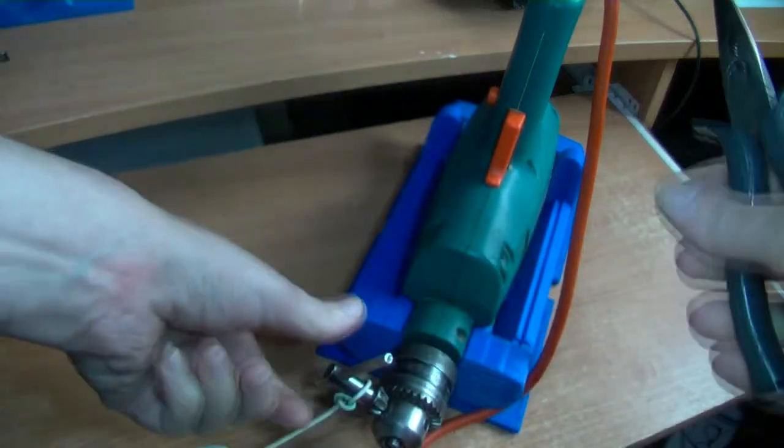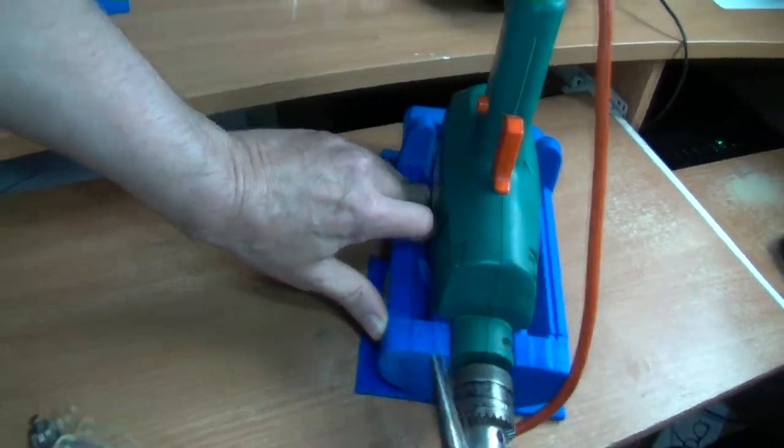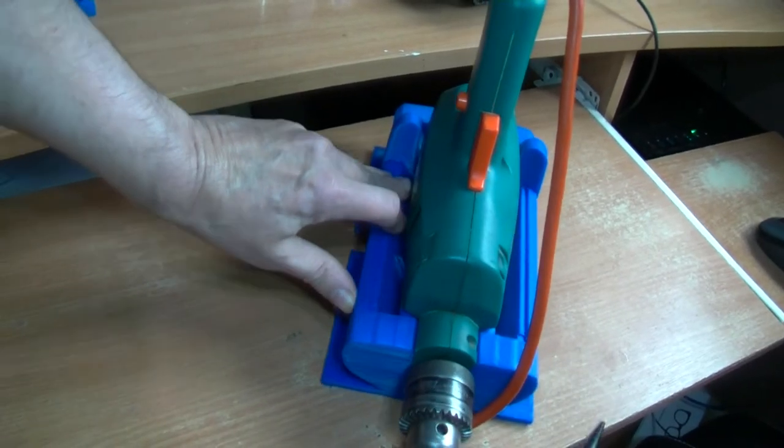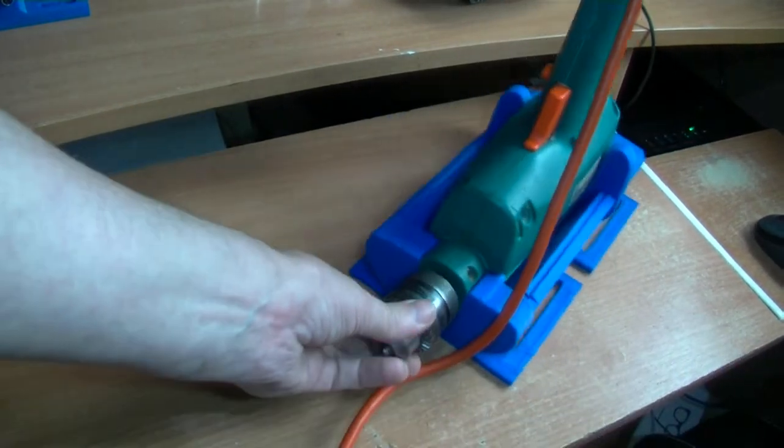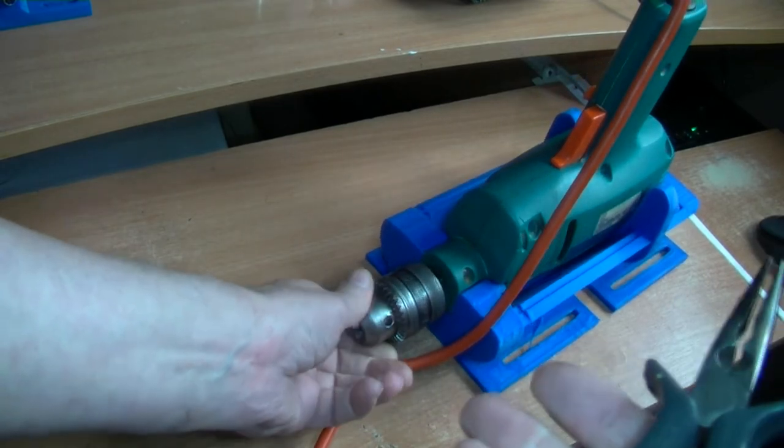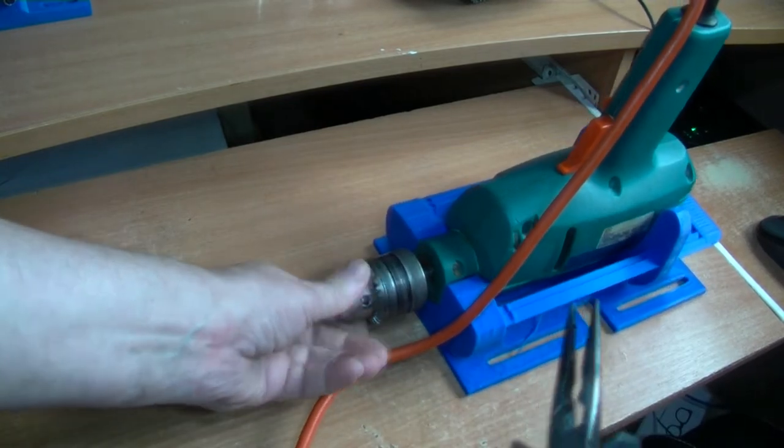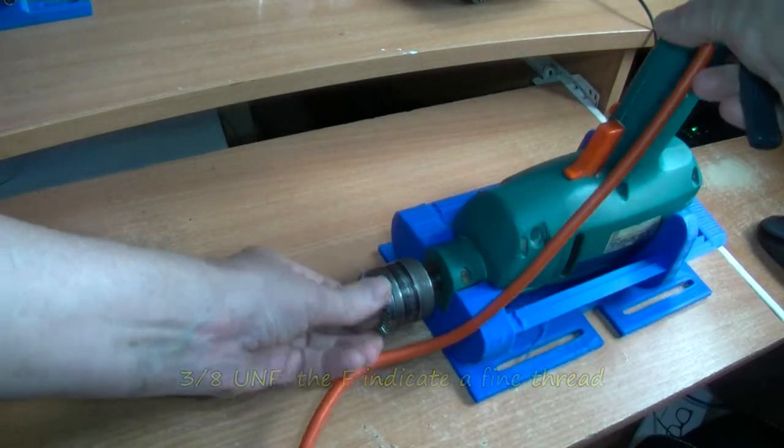On this one, put the key in, give it a bit of a tap, and that will loosen the chuck off. It only needs a short, sharp tap. It doesn't need anything heavy, basically. It's just to loosen the chuck.